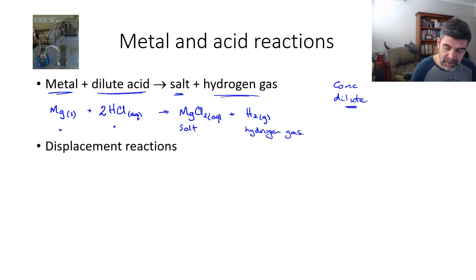Now this particular type of reaction is also known as a displacement reaction. Because what's actually happening is that the metal, the magnesium, being very reactive or very active, is actually pushing the hydrogen ions that are part of the acid out of solution.